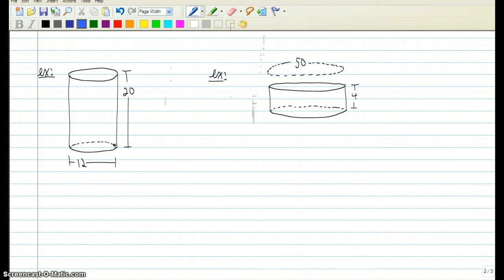We have a cylinder. The diameter is 12, the height is 20. So if we plug those numbers into the formula, we'll get a total volume of 2,261.95 units cubed.